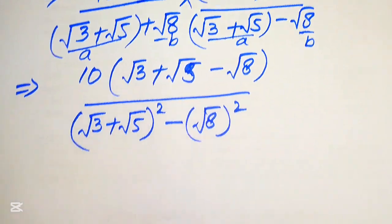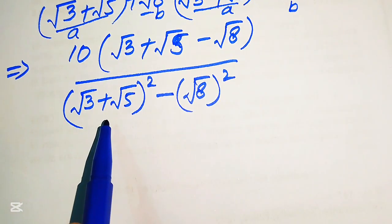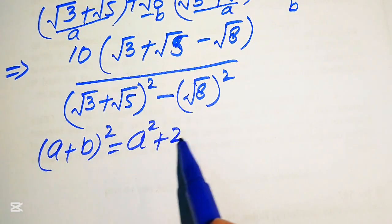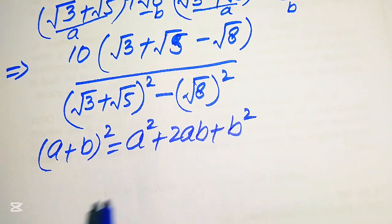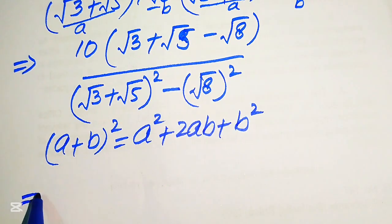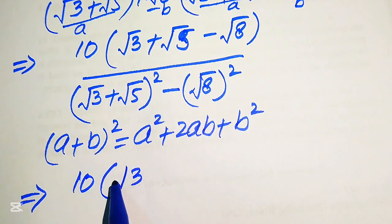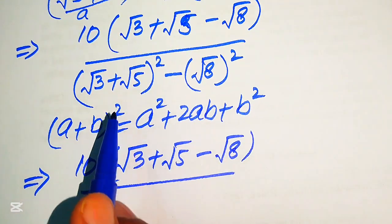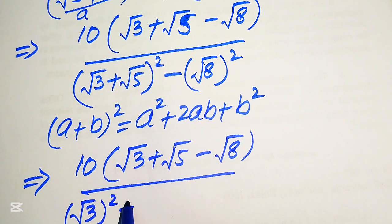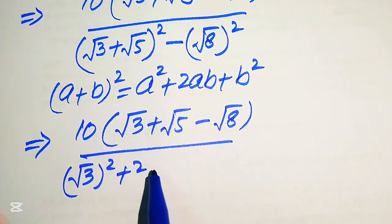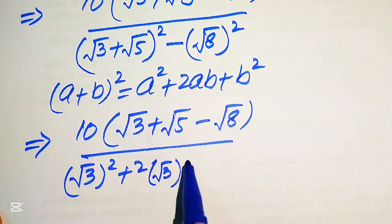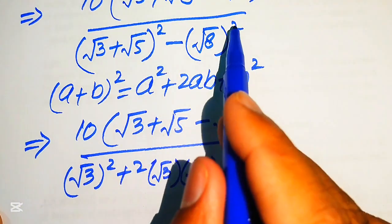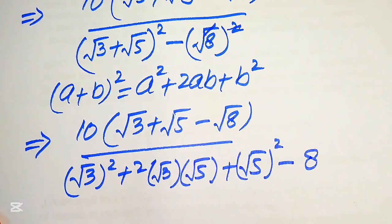Now we focus on expanding the denominator. We apply the square identity: (a + b)² = a² + 2ab + b². Here a = square root of 3 and b = square root of 5. So we expand this term and the denominator is written as a² + 2ab + b², where a is square root of 3 and b is square root of 5, and its whole square, minus (square root of 8) whole squared, which gives just 8.